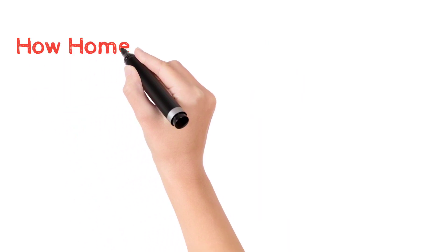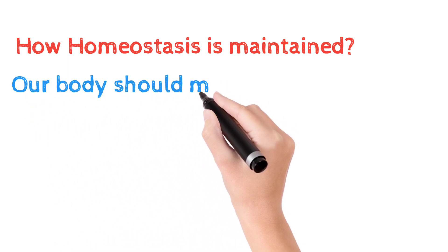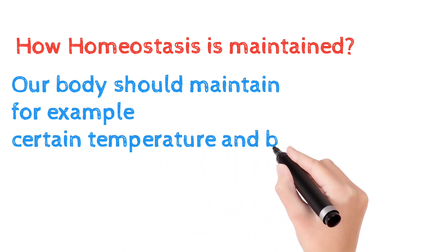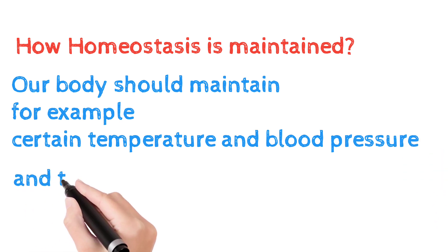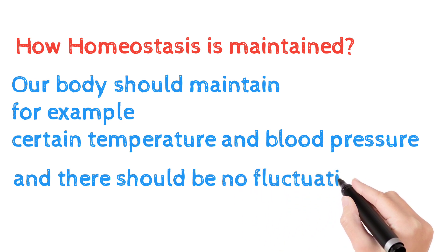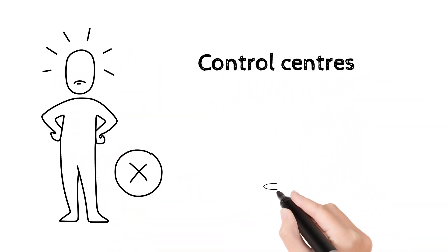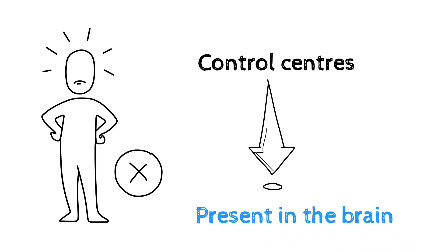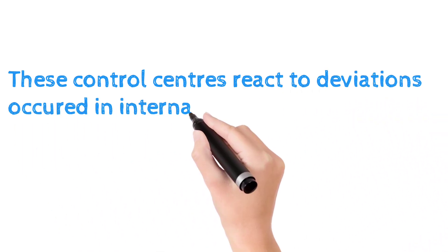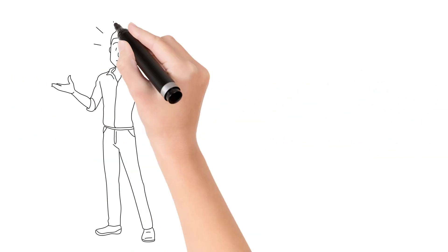Next is how homeostasis works. Homeostasis is maintained by the body. The body has a certain temperature, certain blood pressure, and the body has fluctuations. To maintain these fluctuations, the body has control centers which are present in the brain. This is how the body reacts to deviations from homeostasis.